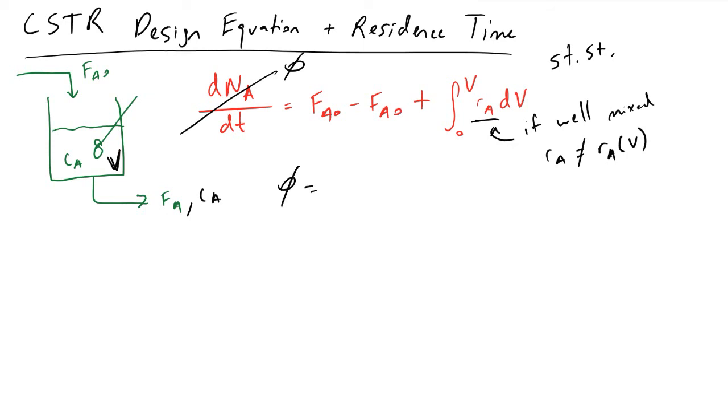So we have zero is now equal to FA0 minus FA, and then plus RA times the volume of the reactor. That's because we're able to pull RA out, and I have the integral from zero to the volume of DV, and that's just V.